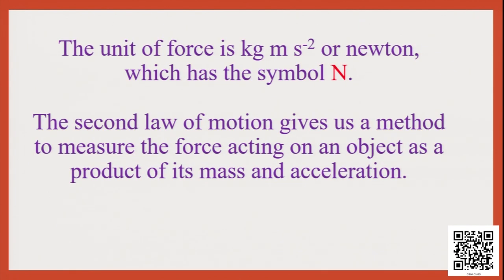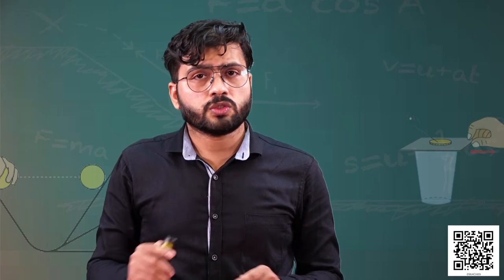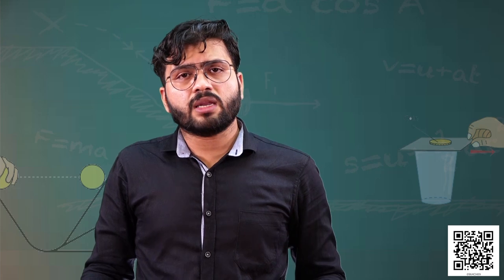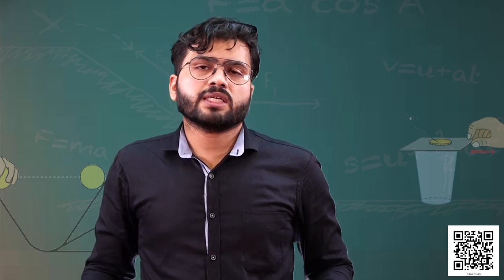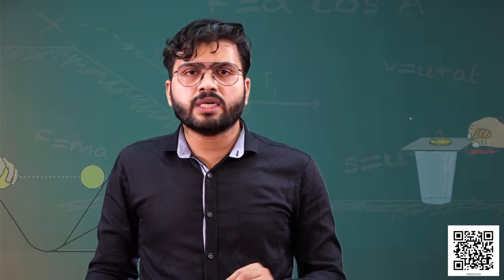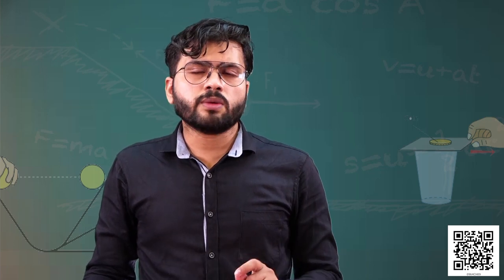The unit of force is kg·m/s² — kilogram meter per second squared — because mass is in kilograms and acceleration is in m/s². This unit is also known as the Newton, given by the symbol N. The second law of motion gives us a method to measure the force acting on an object as the product of its mass and acceleration.